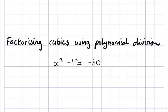Here we go through a worked example of factorizing cubics using polynomial division. By cubic we mean polynomial equations where the highest power is 3, so x cubed. What we're aiming to do is take an equation that looks like this and get it into linear factor form — something like x minus something, x plus something, and x minus something.